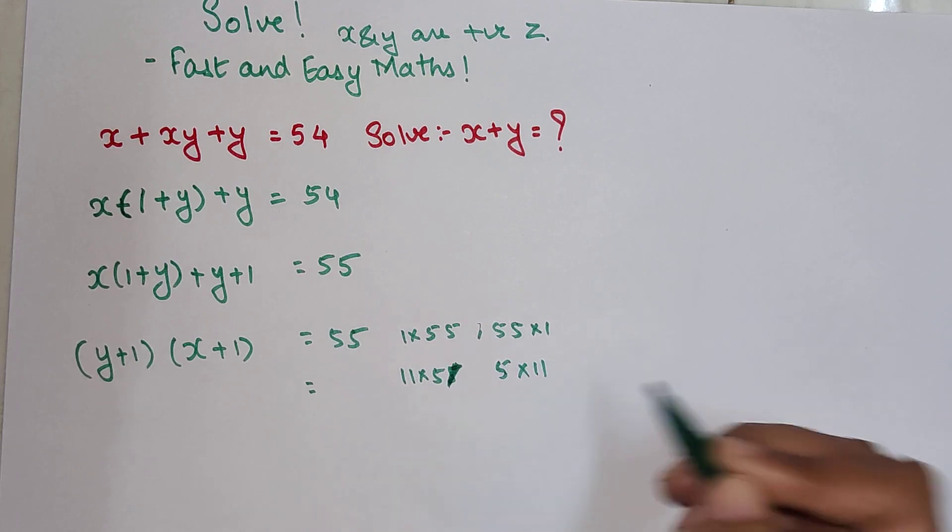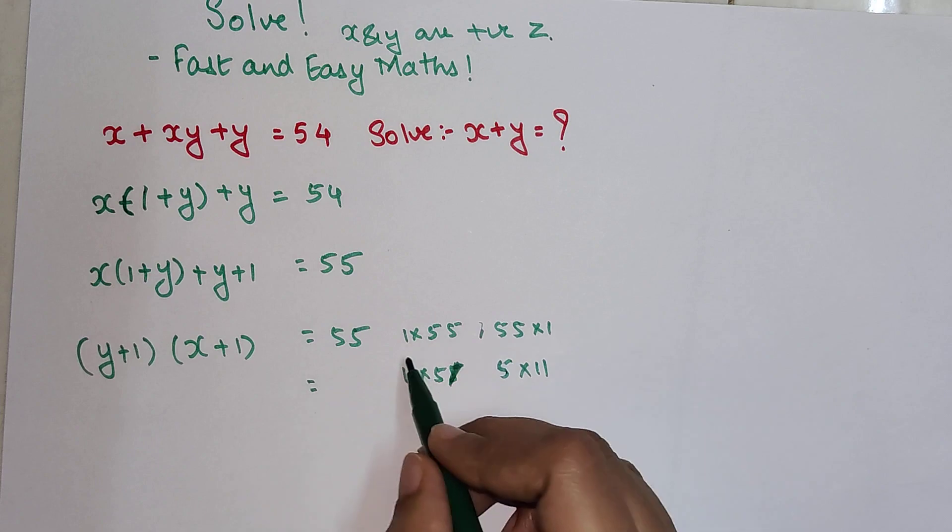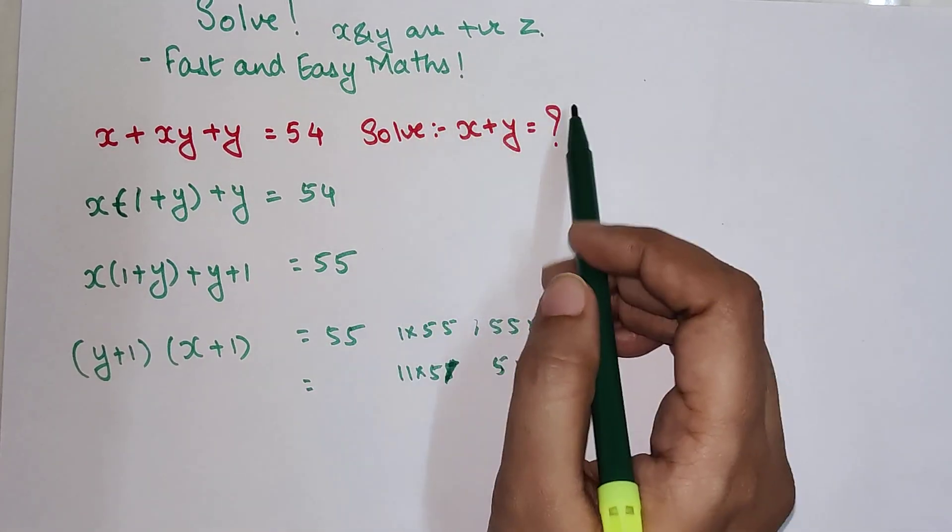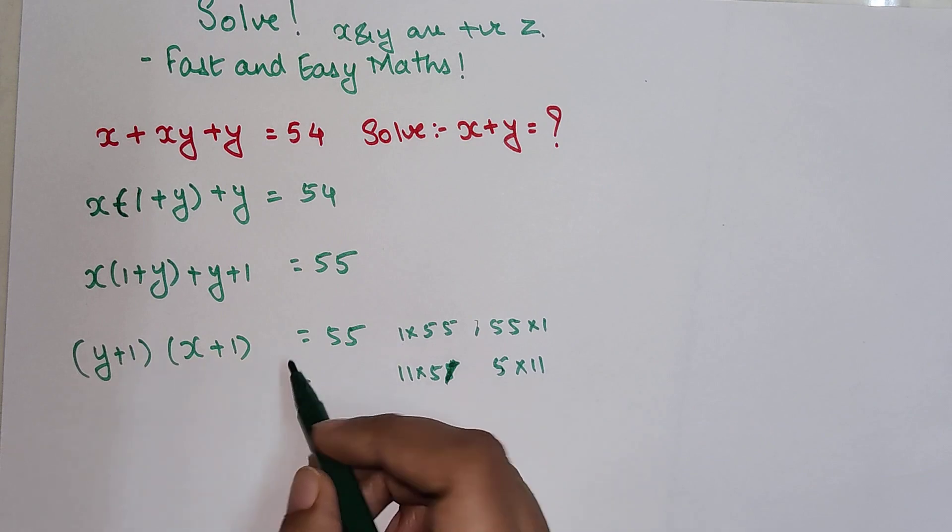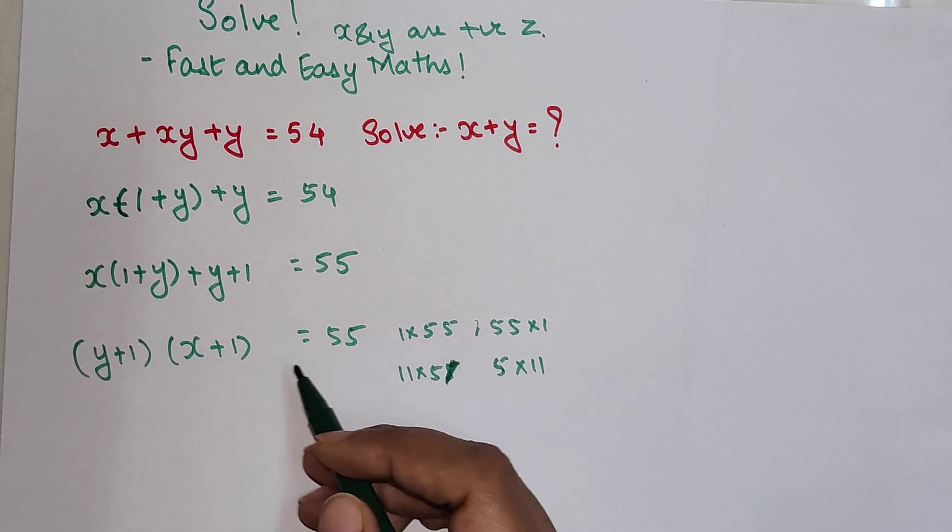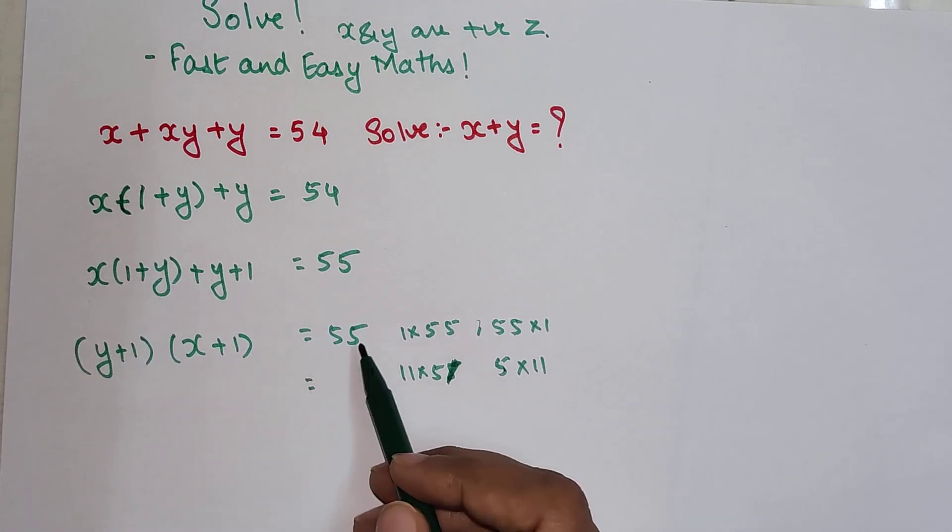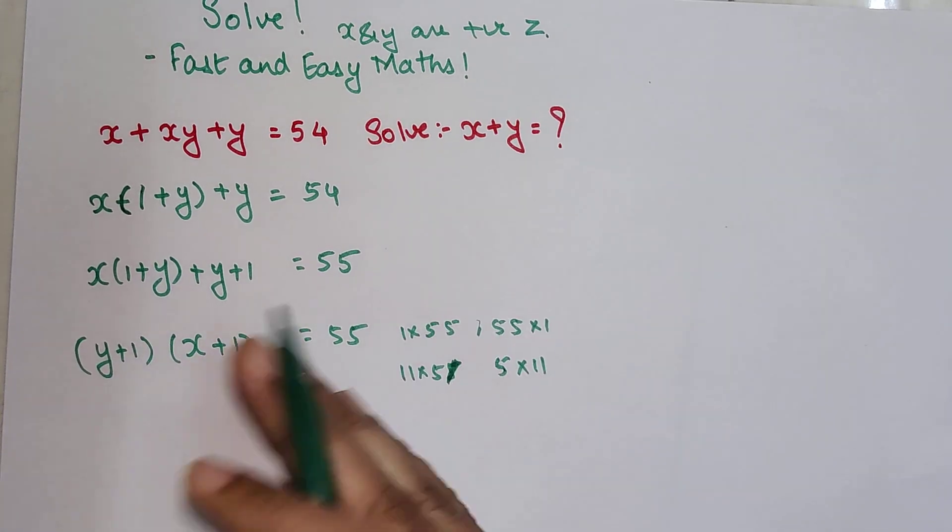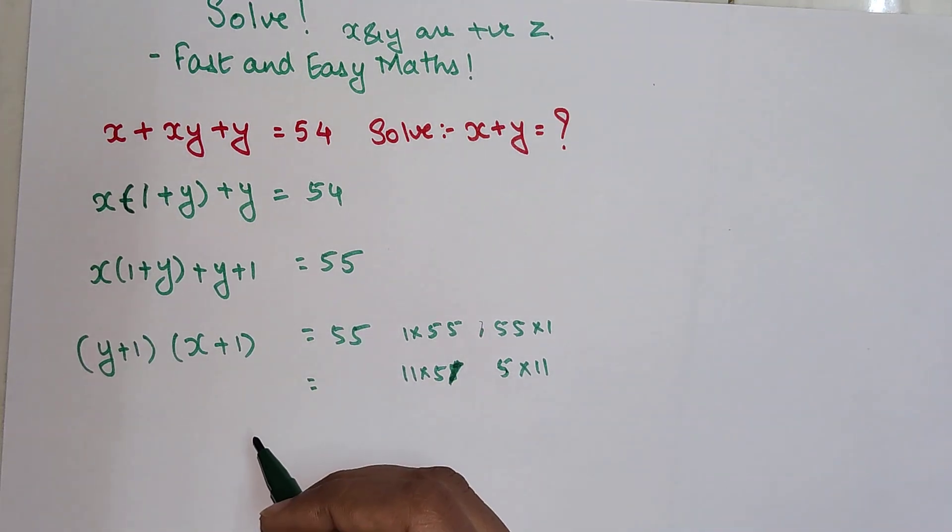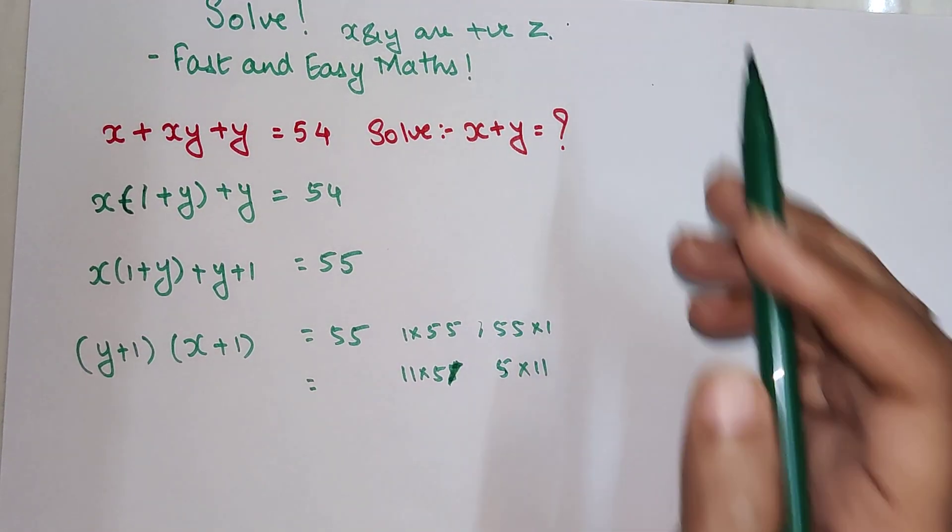But the first scenario is not possible because since they have written that they are positive integers. In that case, if I write this, then either of these brackets will become equal to 1. If x + 1 = 1 then x will become 0, or if y + 1 = 1 then y will become 0, and that is negating this statement.